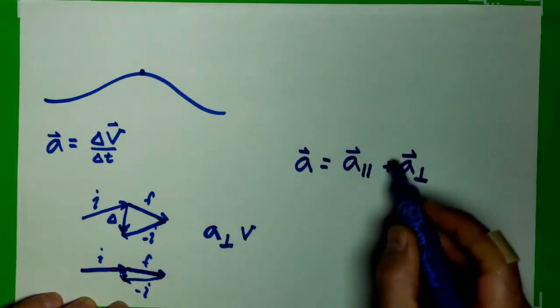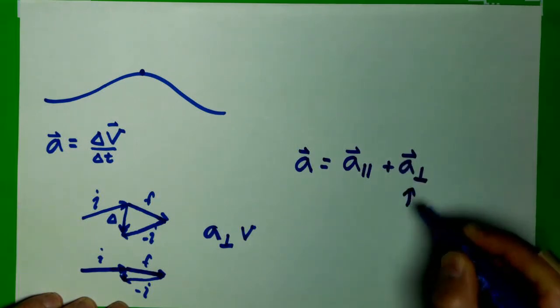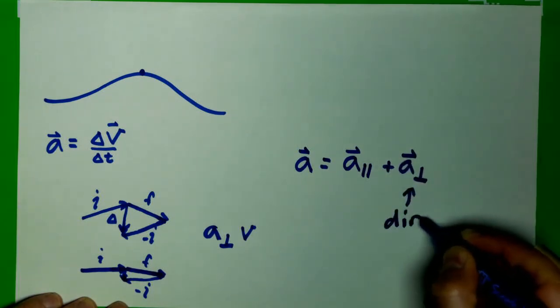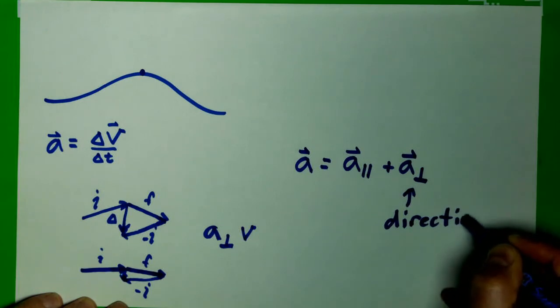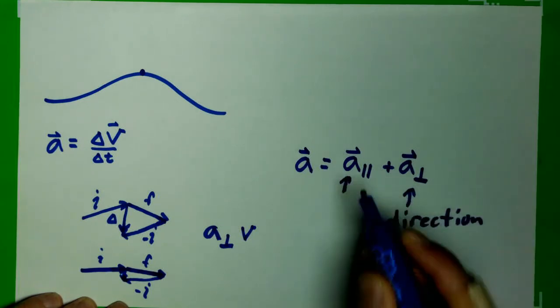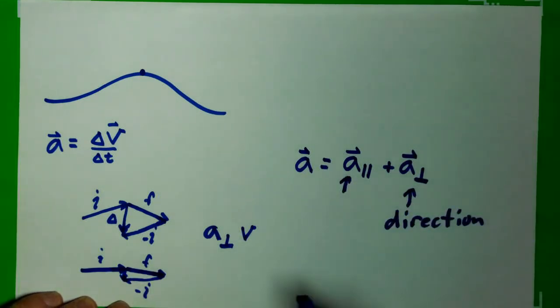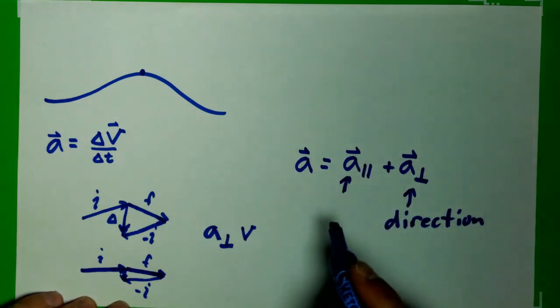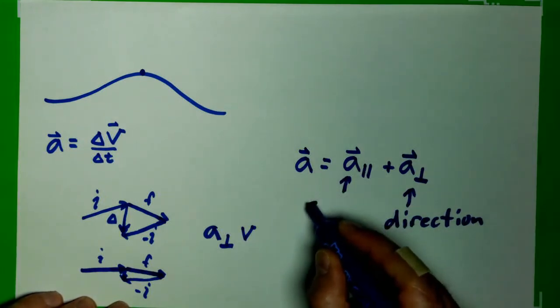The perpendicular part changes direction only, and the parallel part is what makes it actually speed up or slow down. This is our traditional acceleration that we think of. So this is changing the speed.